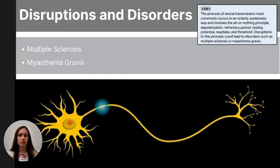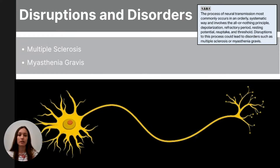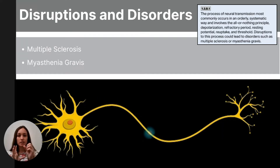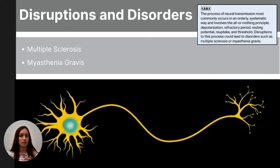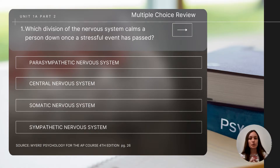It's important to know about two disruptions that can happen in the neural communication process, caused by autoimmune disorders: multiple sclerosis (MS) and myasthenia gravis (MG). These disorders impact muscular control and reaction time and are directly related to dysfunctions in neural transmission. Multiple sclerosis is caused by the deterioration of the myelin sheath — the fatty tissue insulating the axon — which leads to slowing of messages from the brain to the muscles. Myasthenia gravis produces antibodies that block or destroy receptor sites on the dendrites, specifically those that receive the neurotransmitter acetylcholine, which is responsible for messages about movement.